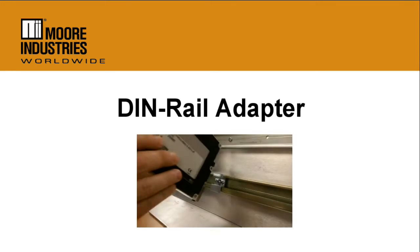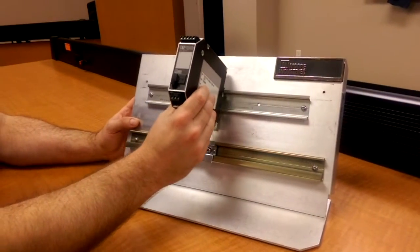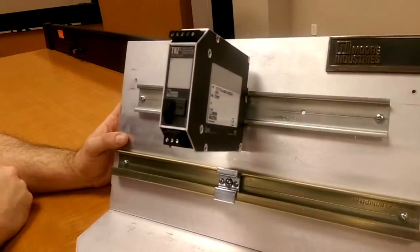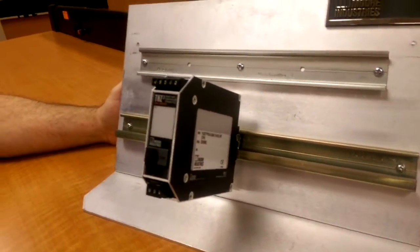Moore Industries products are designed to securely fit into a top hat 35mm DIN rail. Our new DIN rail adapter ensures the same fit for any instrument in an existing G-Type 32mm DIN rail.